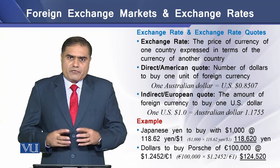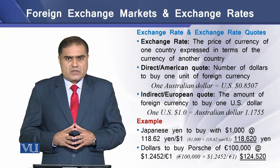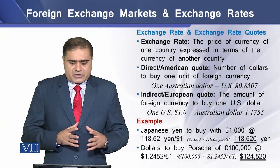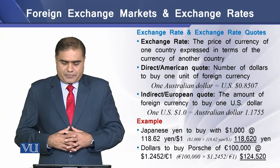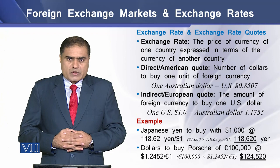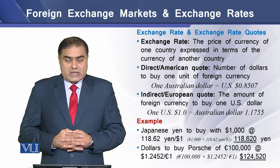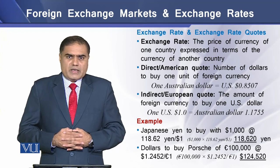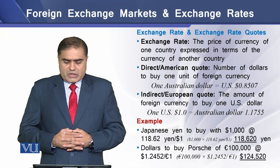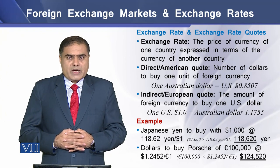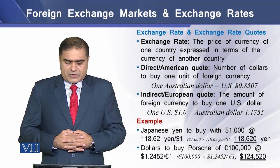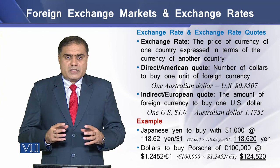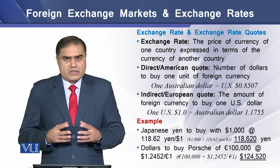Foreign exchange rate can be defined as the price of the currency of one country expressed in terms of the currency of another country. There are two types of exchange rate quotes. One is called the direct or American quote, and the other is called the indirect or European quote. The direct or American quote refers to the number of dollars needed to buy one unit of a foreign currency, whereas the indirect quote refers to the amount of foreign currency one needs to have in order to buy one U.S. dollar.